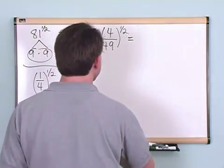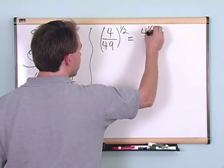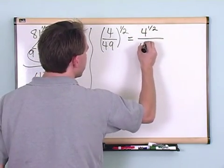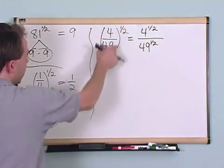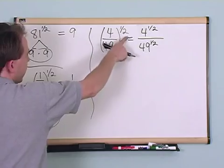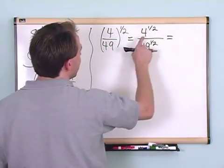this is the same thing as four to the one-half up on top over forty-nine to the one-half on the bottom. Any time you have an exponent applied to a fraction, you can apply the exponent to the top and to the bottom separately. That's exactly the same thing. On the top, we have a square root of four.